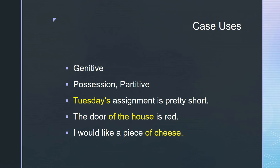The genitive case shows possession primarily, as in 'Tuesday's assignment' or 'the door of the house.' The partitive genitive is when we're talking about pieces of things — partitive as in a part of something. So 'I would like a piece of cheese': the genitive would be the whole wheel of cheese, and the piece is going to come out of it in whatever case it needs for the sentence — in this case a direct object. The partitive is what we have a piece of — it's the whole.